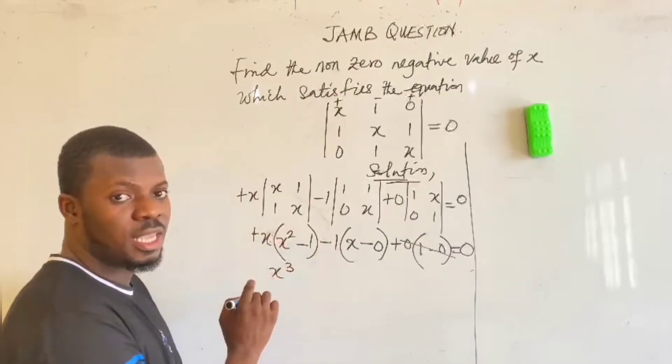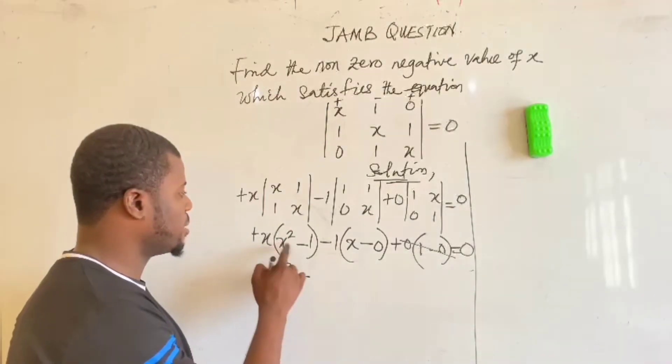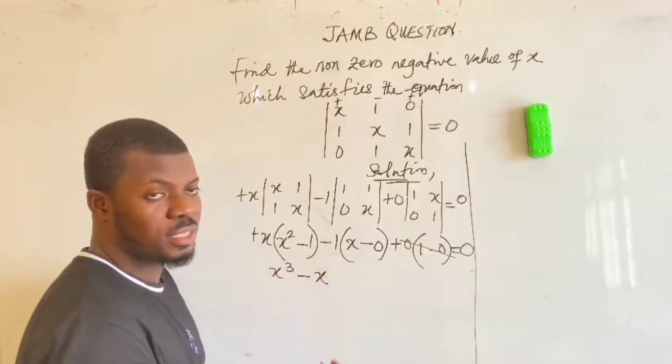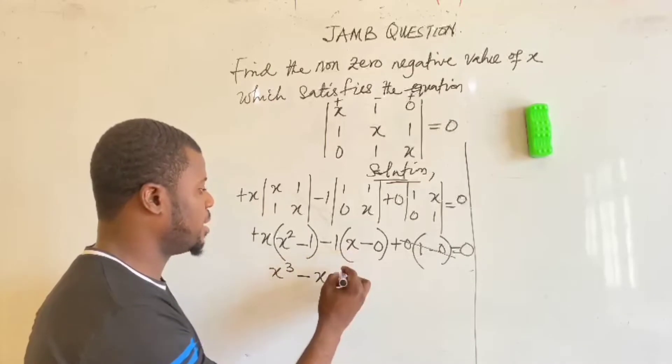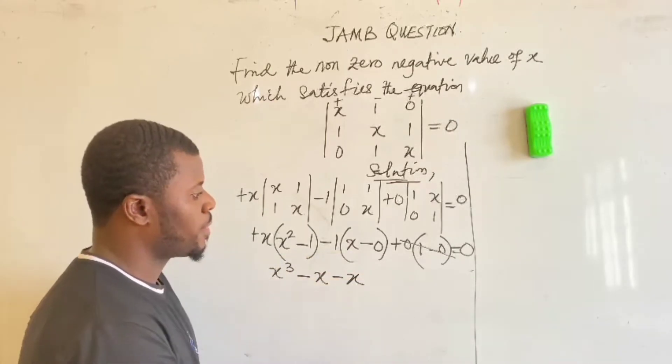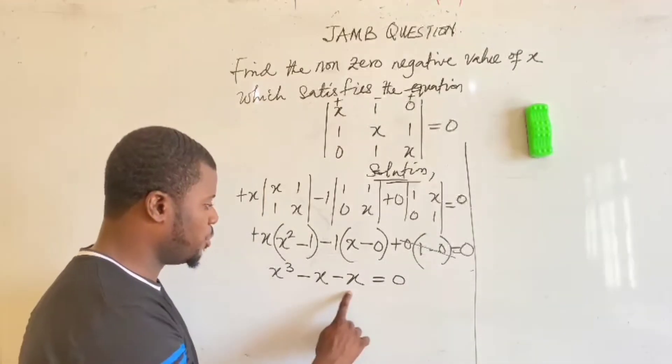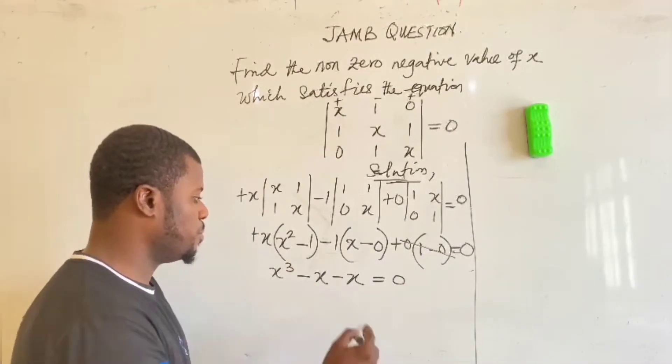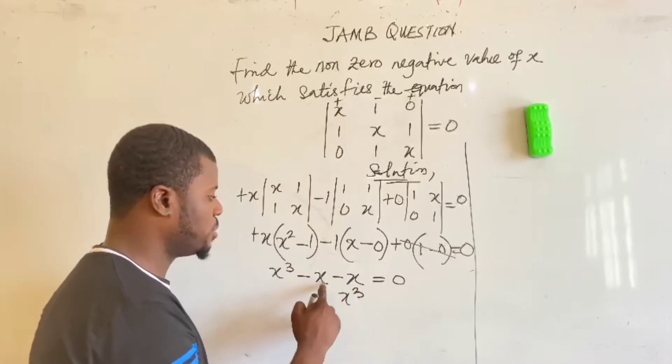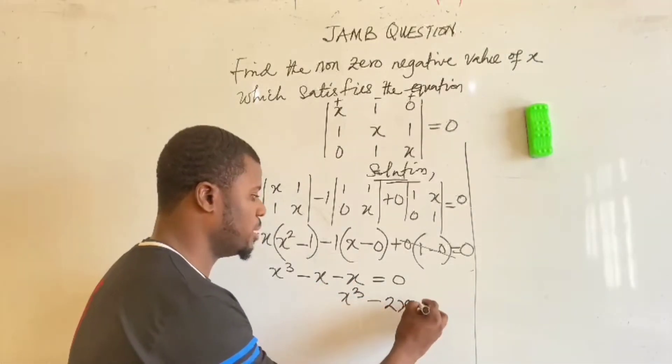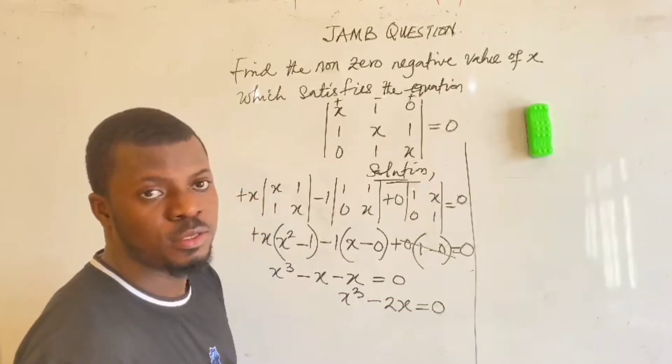Minus x times 1 is x. Minus 0 is x. So minus 1 times x, minus x. And this, you have 0. The next thing we are going to do is to add them together. x cubed minus x minus x, minus 2x. And this is equal to 0.